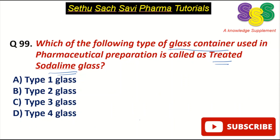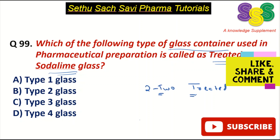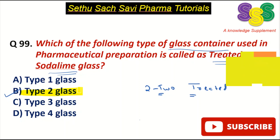Coming back to our question: which glass container is called treated soda lime glass? Remember 'treated' — you can write 2 as TWO, so T and T. The correct answer is B: Type 2 glass. Thank you.